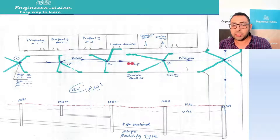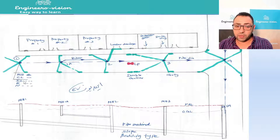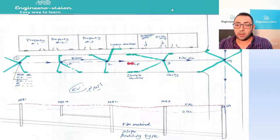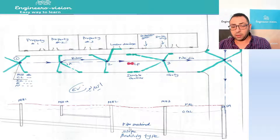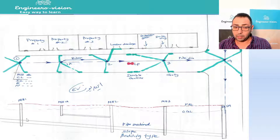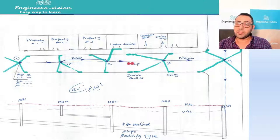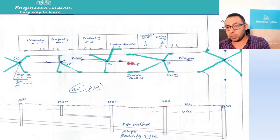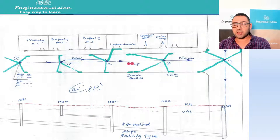Before going to the profile, let's see what to expect in the layout plan: you will see the pipe diameter, manhole details, the easting and northing coordinates of each manhole, the invert level, the cover level, and the manhole number. In the profile drawing, you will see the invert levels of the manholes, the slope of the pipes, the bedding type, and the pipe material — whether it's HDPE, GRP, or another specified material.